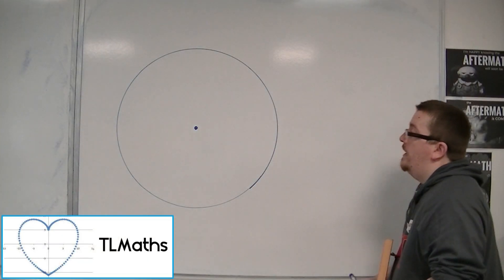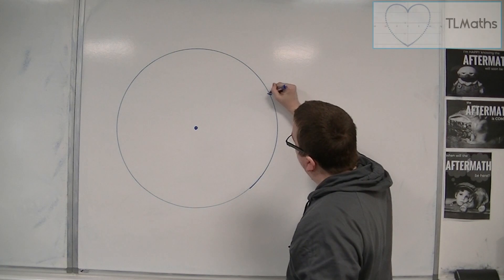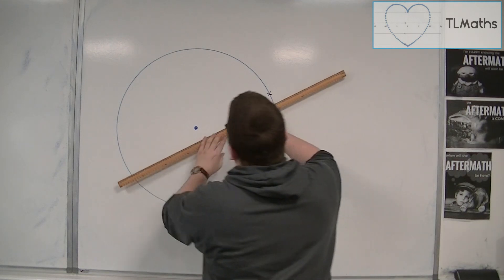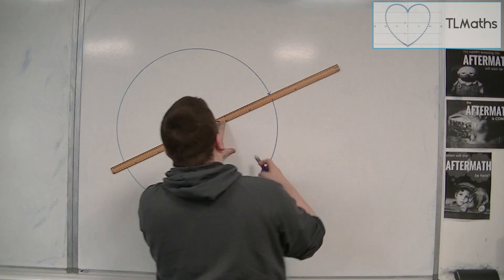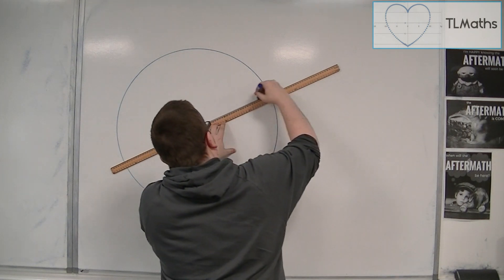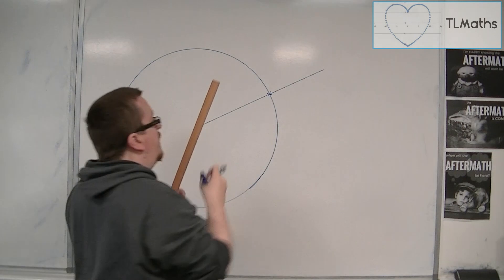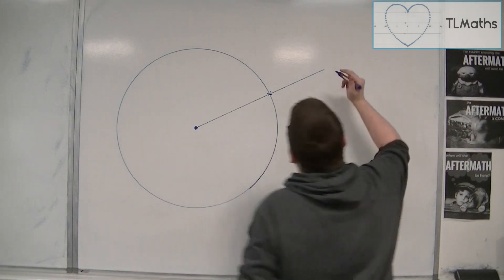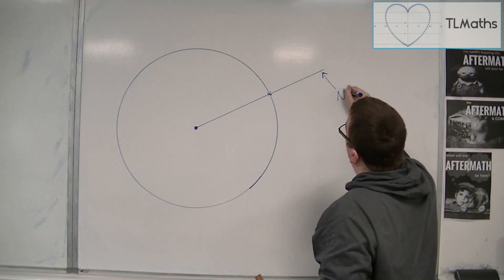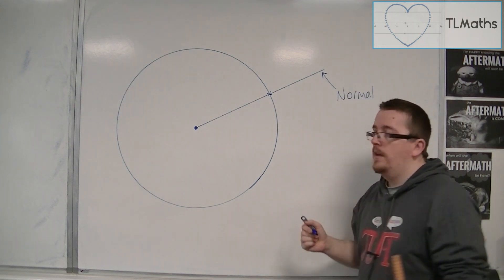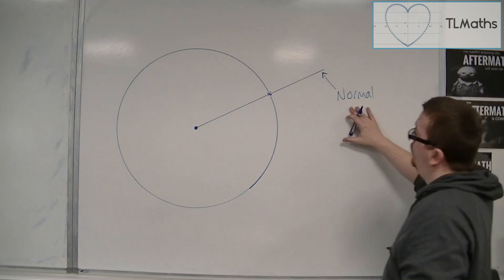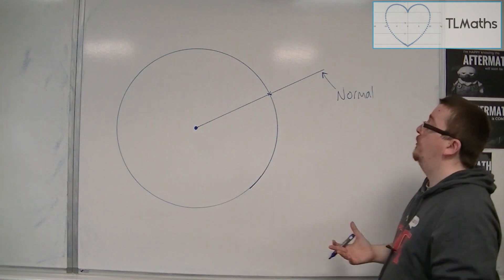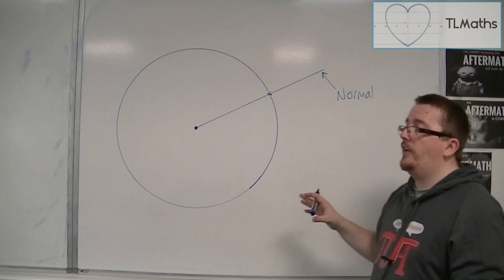Here is another circle. If I choose a point on the circle and then draw a line from the centre to that point, we usually know this as a radius. What I'm going to do is continue the line through the circumference of the circle — this line is a normal to the circle. A normal to the circle will always go through the centre of the circle. We've looked at tangents and normals before, but not in the context of a circle.